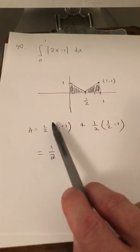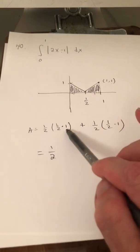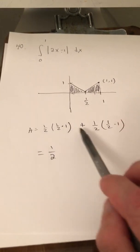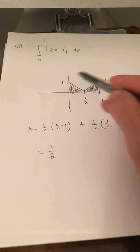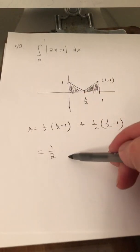So the area is going to be, again, 1/2 base times height plus 1/2 base times height. So when you add these all up, you get an area of 1/2.